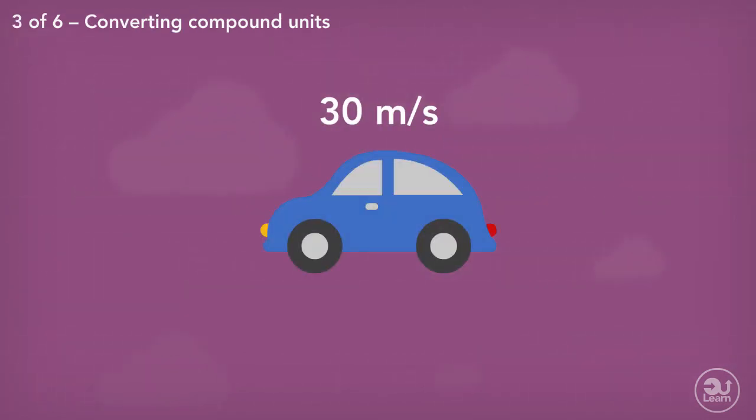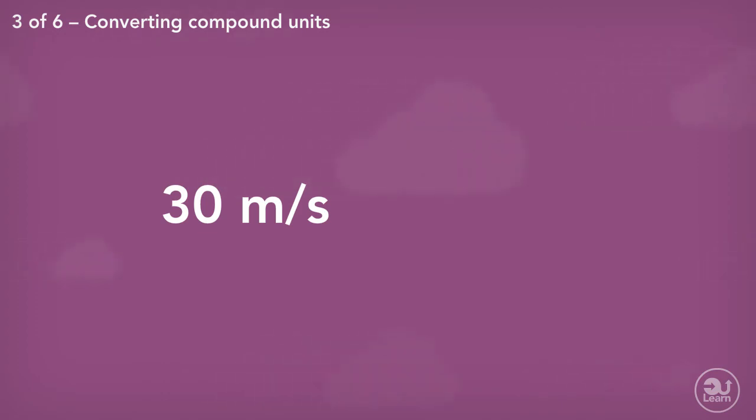Here's an example. A car is traveling at 30 meters per second. Convert this speed into kilometers per hour. We start by converting our value to the fraction 30 over 1. This shows us that the car covers 30 meters per one second. We proceed now to convert the individual units to the desired units from the question.